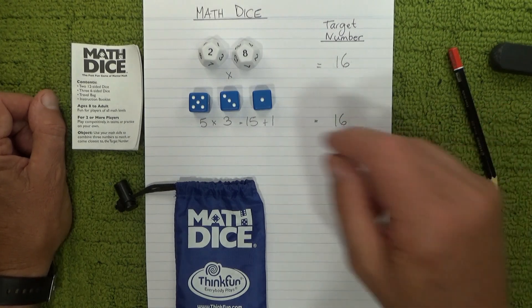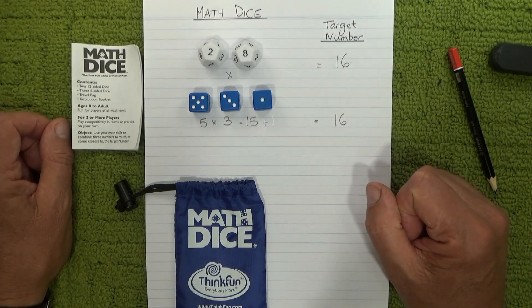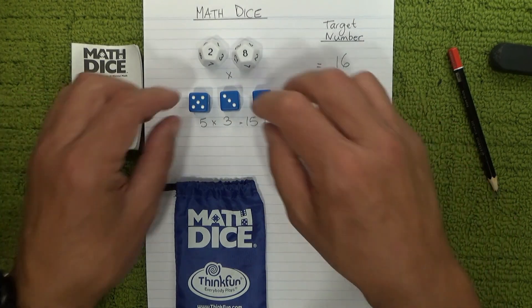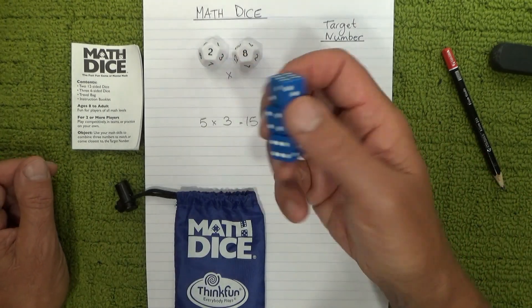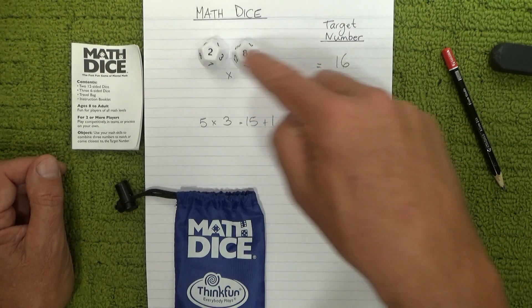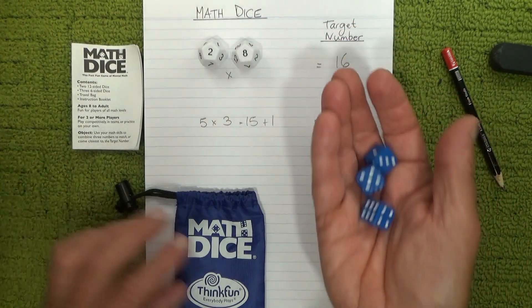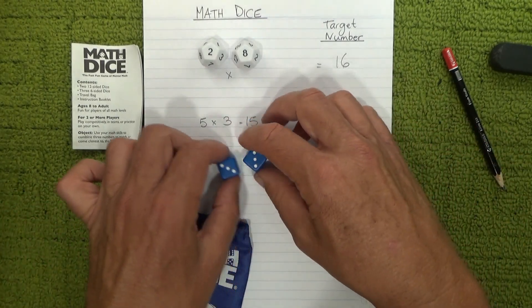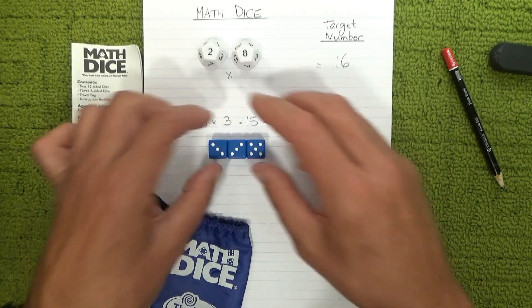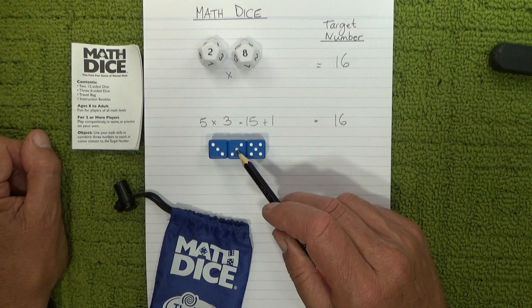So I write that down: five times three equals fifteen plus one equals sixteen. So there we go, you can do different combinations of multiplication and addition and subtraction and division to get to the right answer. Okay, so I'll keep the sixteen up the top. I'll throw another three dice and see what numbers I get.